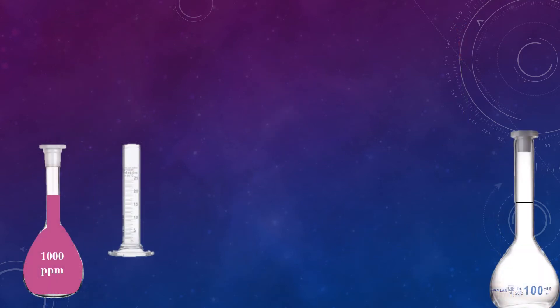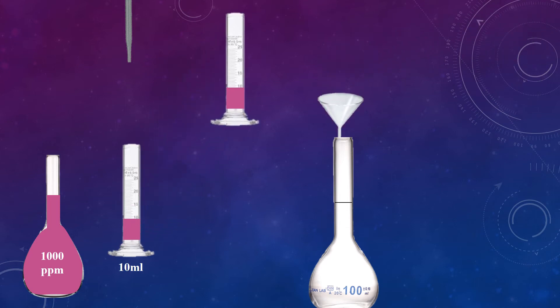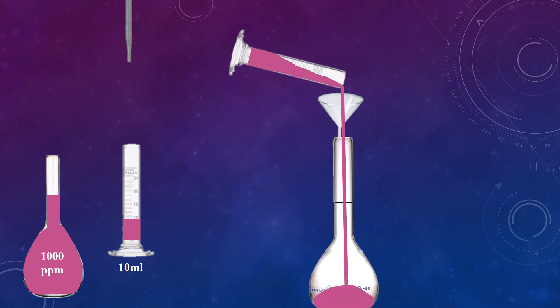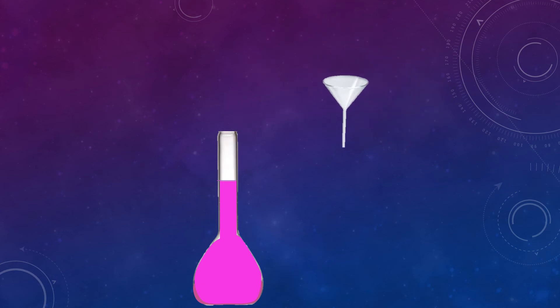First of all, take 10 ml from the stock solution of potassium permanganate using a pipette, and add it into the measuring cylinder. Open the flask and place the filter paper on the funnel. Add the solution into the 100 ml measuring flask. Always use filter paper to eliminate chances of any type of impurity. Add water up to the mark and store the solution for further use. This will be 100 ml of 100 ppm potassium permanganate, prepared from 1000 ppm stock solution.